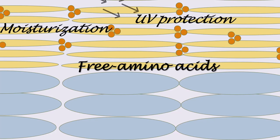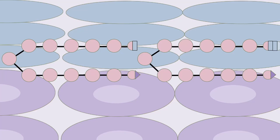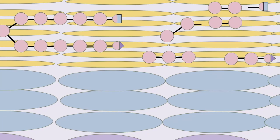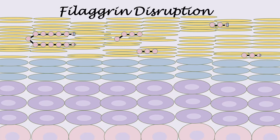In ichthyosis vulgaris patients, there are mutations in the FLG genes resulting in filaggrin disruption. Inappropriate pro-filaggrin is synthesized in the granular layer and is unsuitably cleaved into inappropriate filaggrin. Improper filaggrin proteins move up through the skin layers until they reach the top part, where they create an inconvenient skin barrier with holes that allow water to pass through, resulting in loss of skin hydration along with dry and thick skin.